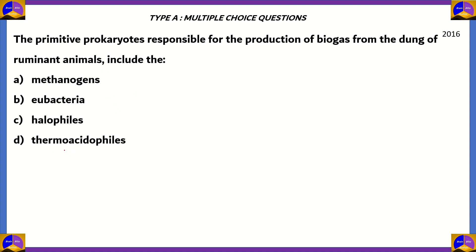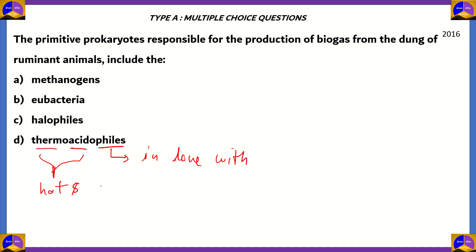Option D says thermoacidophiles. The suffix '-phile' means 'in love with', so thermoacidophiles are bacteria that can survive in hot as well as acidic environments. They're not responsible for the production of biogas, so option D is incorrect.